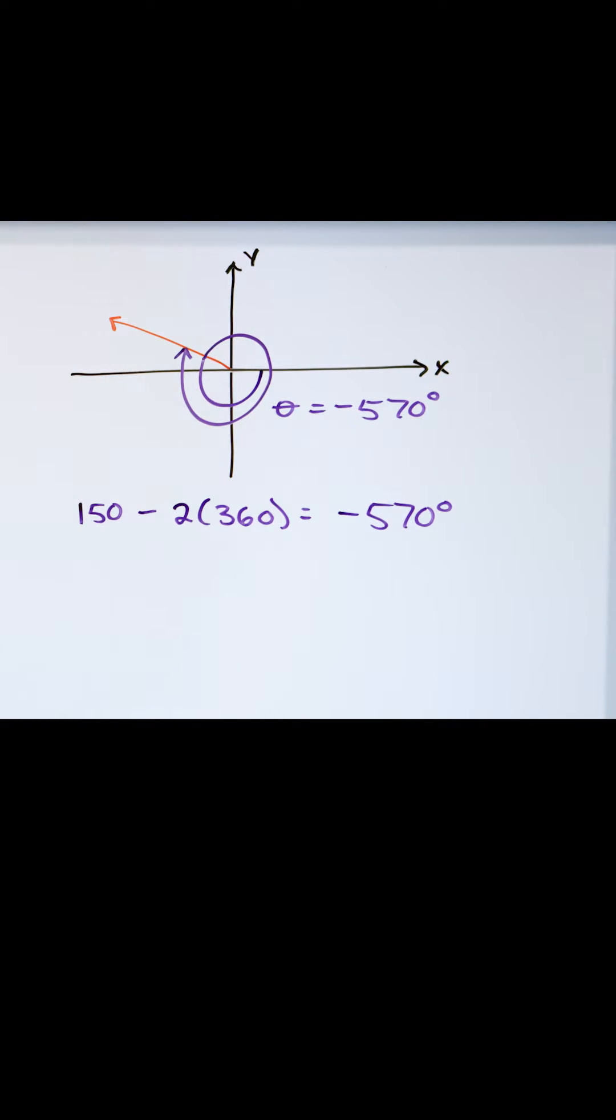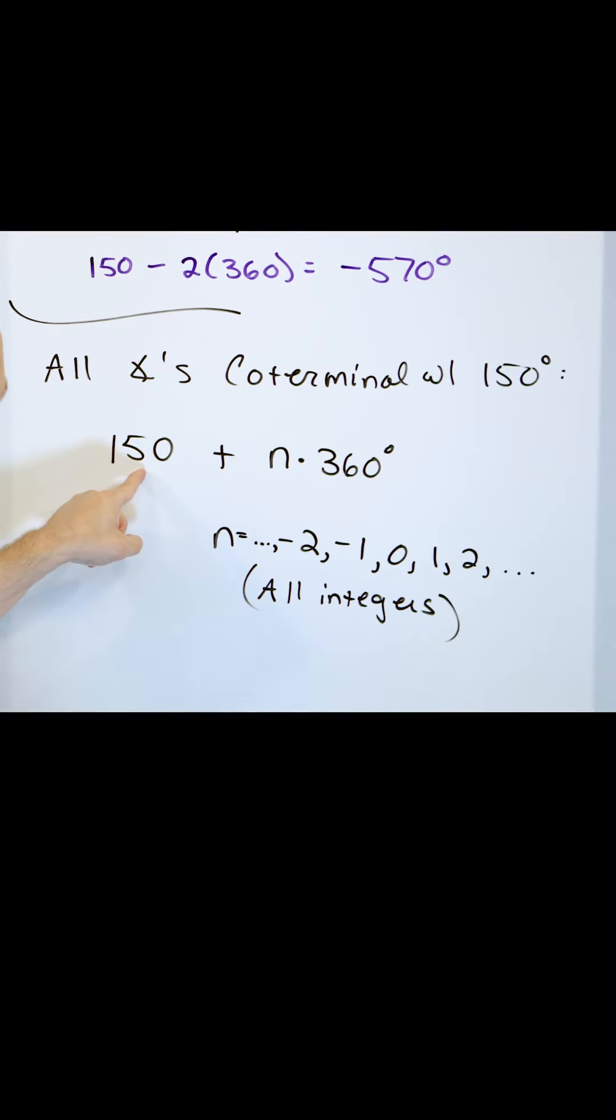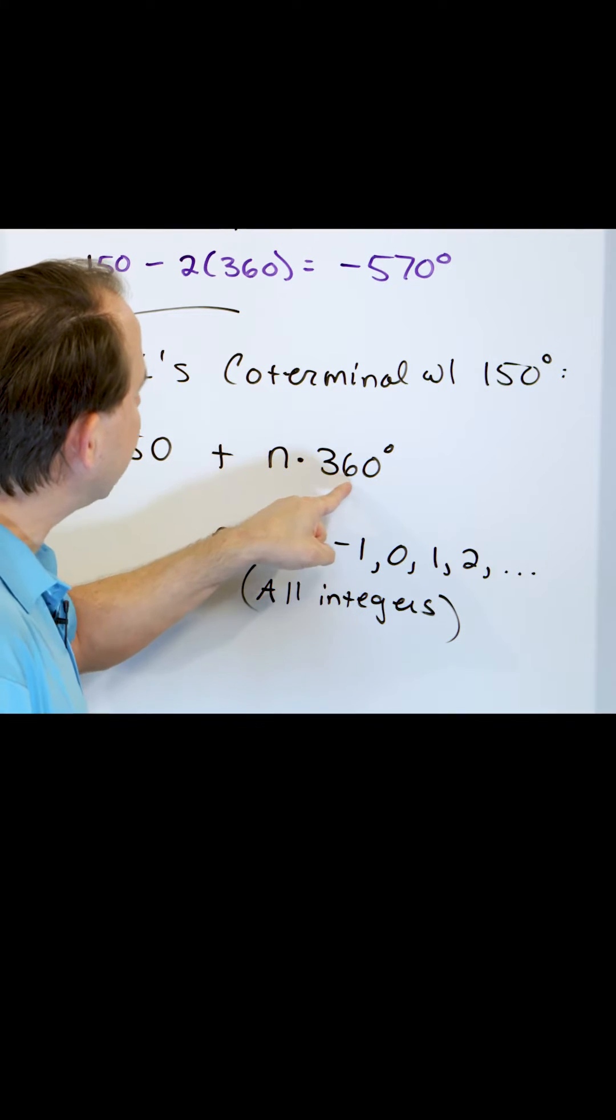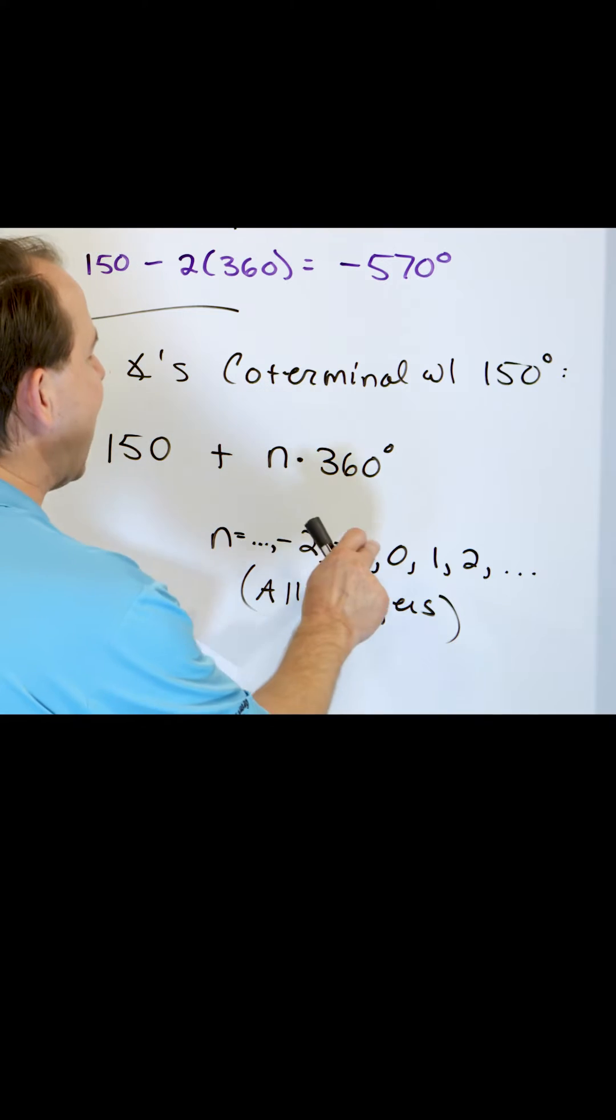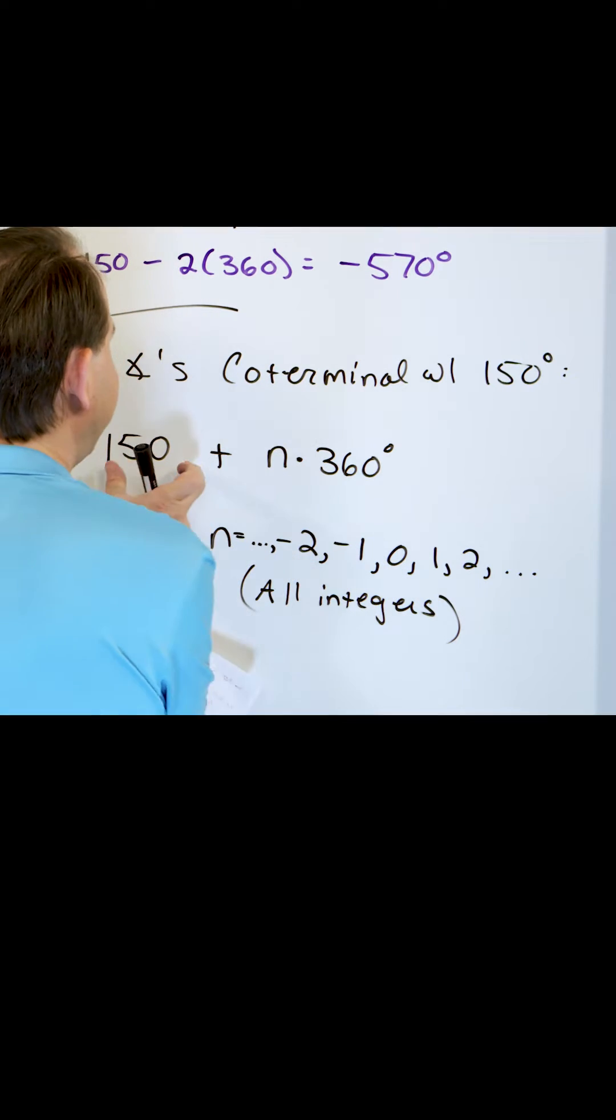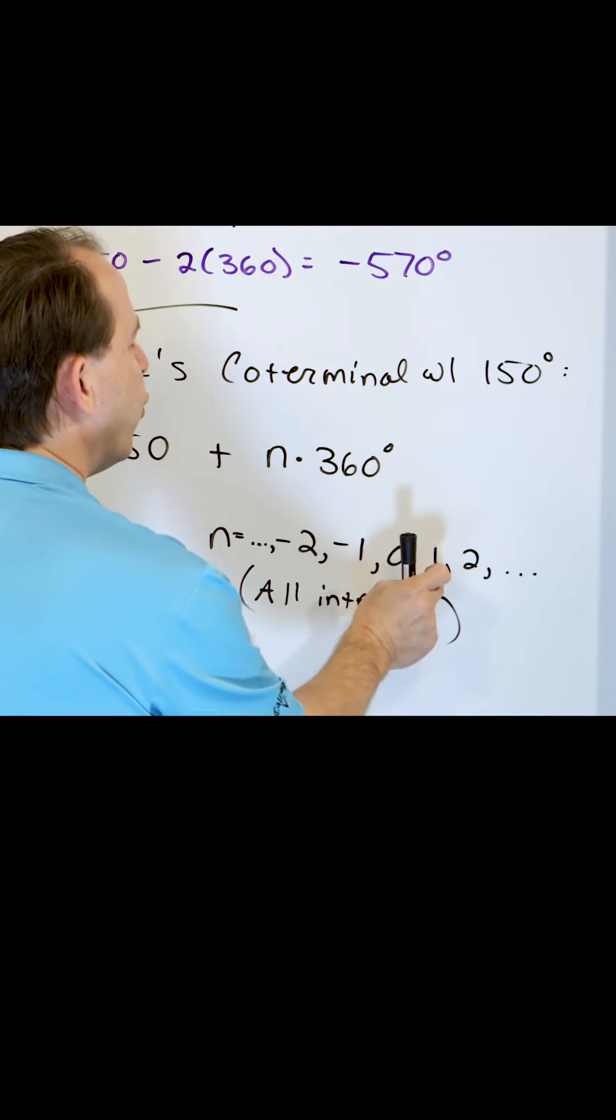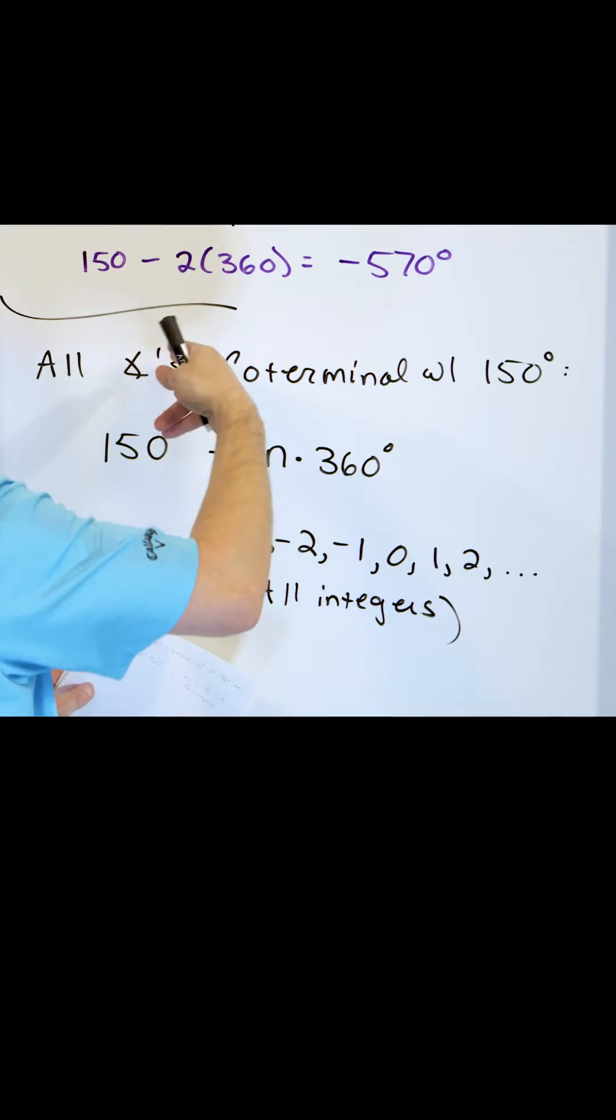So to summarize the whole thing, what it's saying is you start with some kind of baseline angle and I can add as many 360 degrees to it as I want. If I add zero 360s to it, then I just have my original angle. If I add one 360 to it, then we did those on the board.